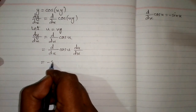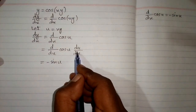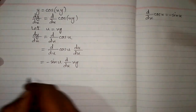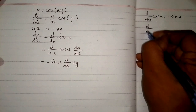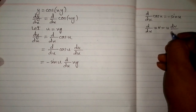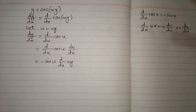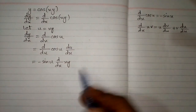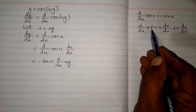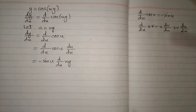Now we can take the derivative of cos(u), which is minus sine of u, and then the derivative of u, so we have d/dx of xy. We will apply the product rule of differentiation, which states that the derivative of uv equals u times the derivative of v plus v times the derivative of u. We can see that we have x in place of u and y in place of v.